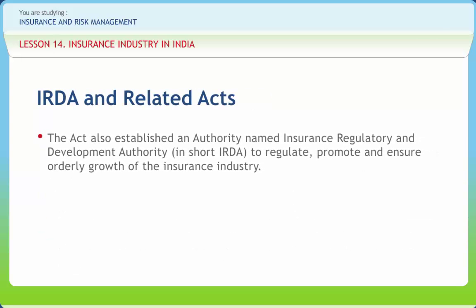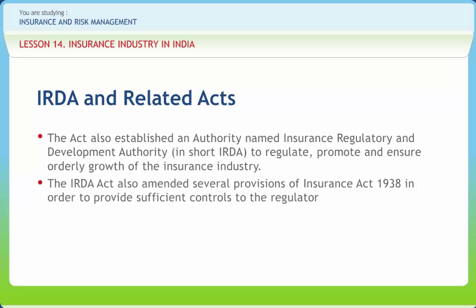The Act established an authority named the Insurance Regulatory and Development Authority (IRDA) to regulate, promote and ensure orderly growth of the insurance industry. The Act provided for replacement of the Office of Controller of Insurance under the Insurance Act by IRDA, and all powers and functions of the Controller of Insurance have been vested in IRDA. The IRDA Act also amended several provisions of the Insurance Act 1938 to provide sufficient controls to the regulator in the liberalized setup. The insurance sector went through a full circle from being unregulated to completely regulated and then partly deregulated.